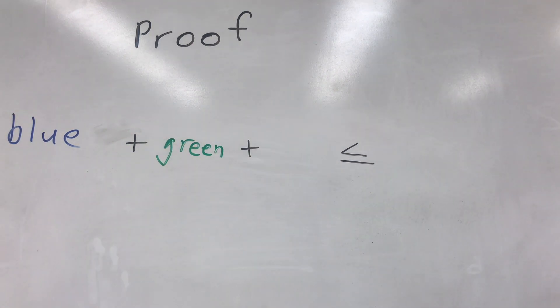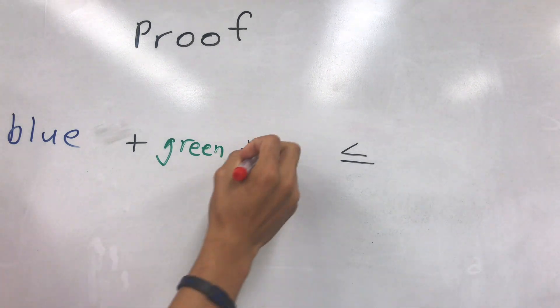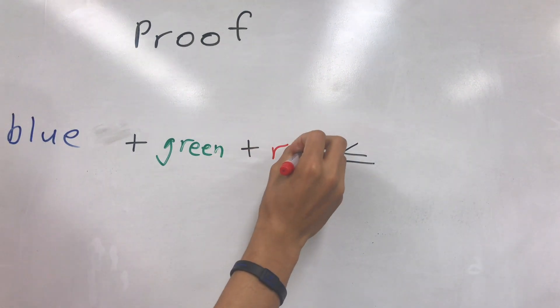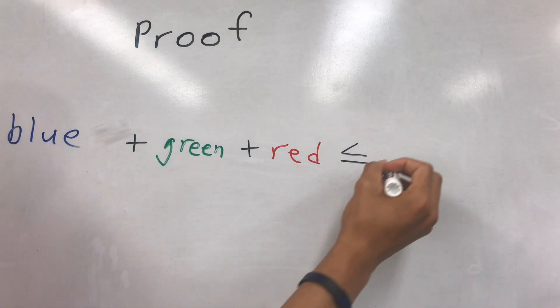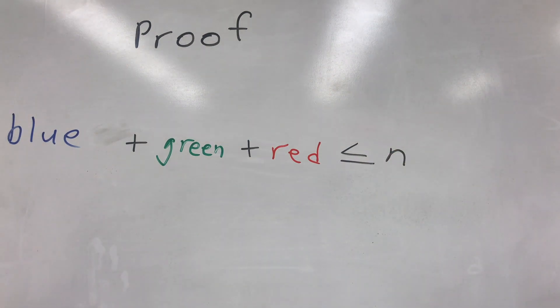This means that the count of each color must be at least equal to 1 third of n. However, let's assume the number of blue vertices is greater than n over 3. Then red plus green plus blue is greater than n, which is a contradiction. So, the number of blue vertices must be less than or equal to n over 3, completing the proof.